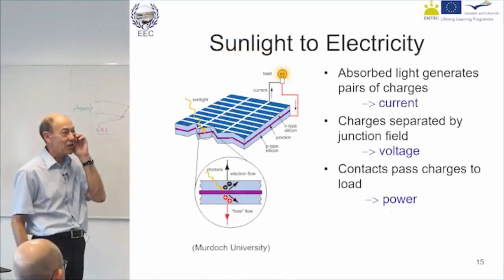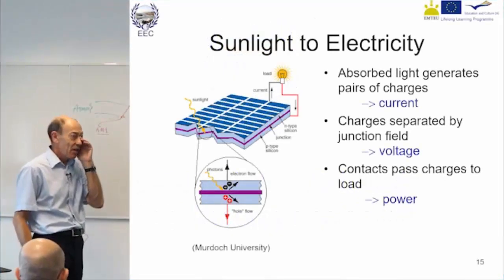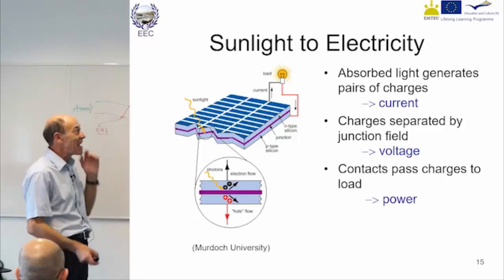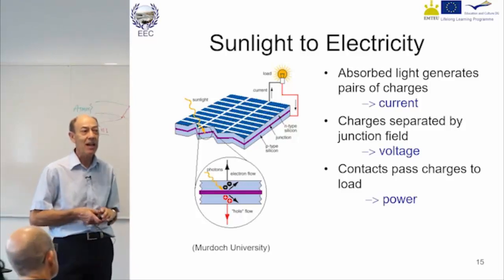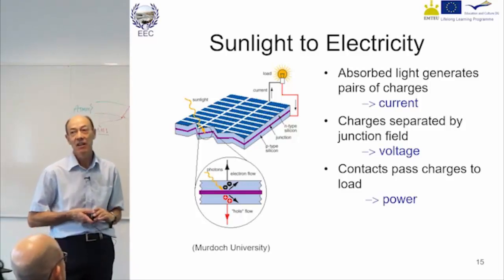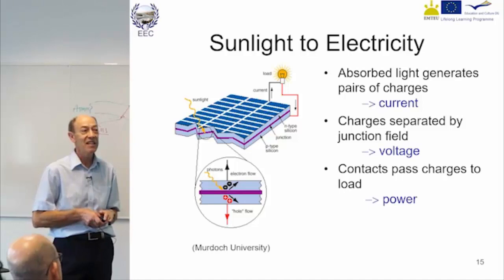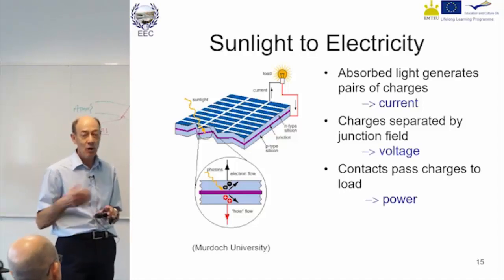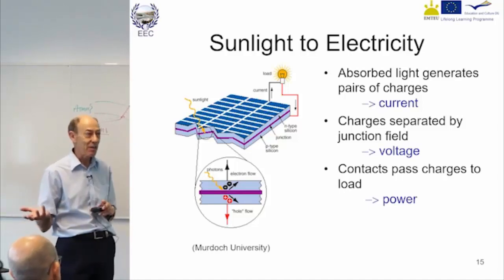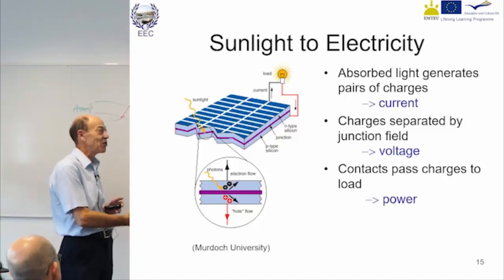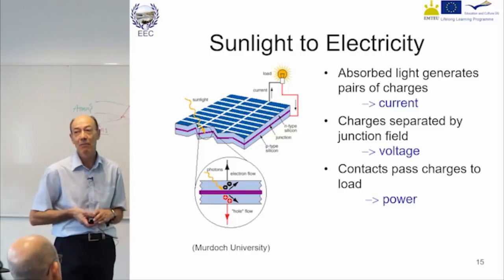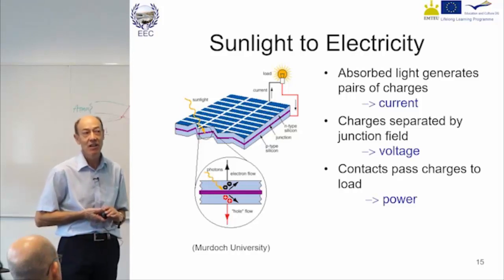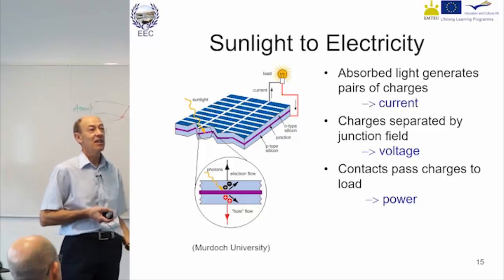Sunlight to electricity — the photovoltaic effect does it without moving parts, without a chemical effect, and without the need for heat. There will be heat generated because it's unfortunately a by-product; it's the waste that happens in a conversion process, but it doesn't require heat.